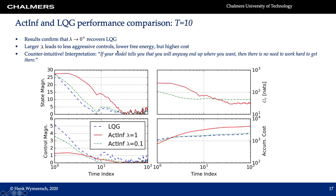It is interesting to see that larger λ leads to less aggressive control, with lower free energy but higher cost — a somewhat counterintuitive result. One would expect larger λ to lead to more aggressive control, bringing the state and control magnitude close to zero quickly. Recall that with large λ, the goal prior is very concentrated around the target value of zero. The interpretation is: if your model tells you that you will anyway end up where you want, then there is no need to work hard to get there. So there is no need to apply large controls, because the model assumes you will reach your goal anyway. This was a counterintuitive but interesting result.